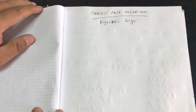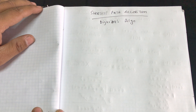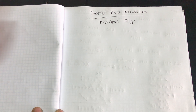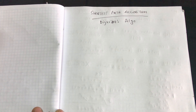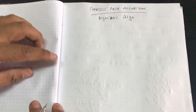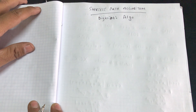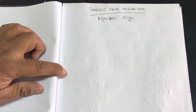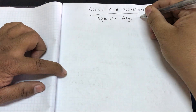Dijkstra's algorithm is used to route your packets to different places, and one variation may also be used in Google Maps to find a location or direction — the shortest path from one source to one destination. This algorithm is quite simple and we're going to learn it today with an example.